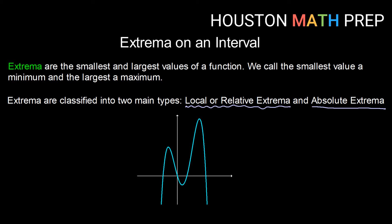For this graph shown here, which we're going to take as having a domain of all real numbers, when we think about absolute extrema, what is the largest y value that this graph achieves over its interval? We can see that this value up here — this y value, this top of this hill — there is no y value larger than that. So that would be an absolute max there.